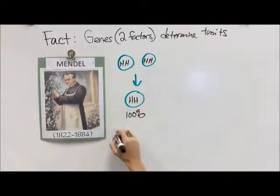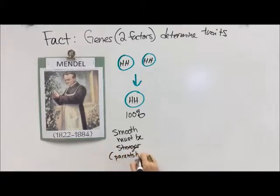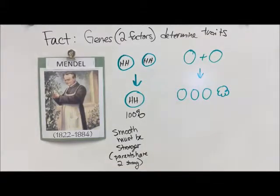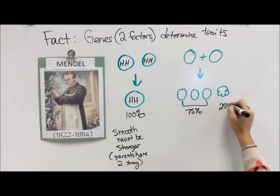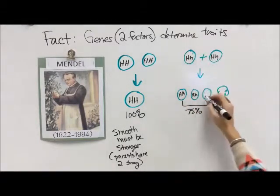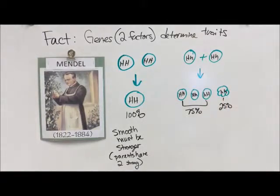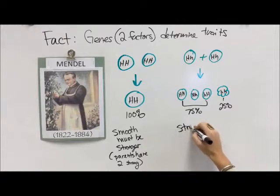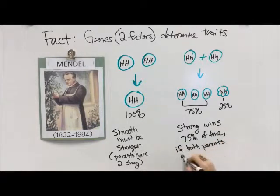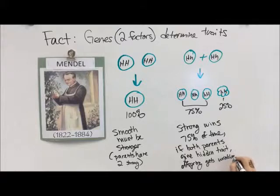Long story short, he figured out that if parents had two dominant alleles and both parents had that, it's going to be smooth 100% of the time. But if two smooth parents each have a hidden trait, then we could get big H big H, big H little h, little h big H, or little h little h — and that's how we get that 75-25 split. We have one homozygous dominant, two heterozygous, and one homozygous recessive. The dominant wins 75% of the time, but the hidden trait appears 25% of the time, giving us wrinkly peas.